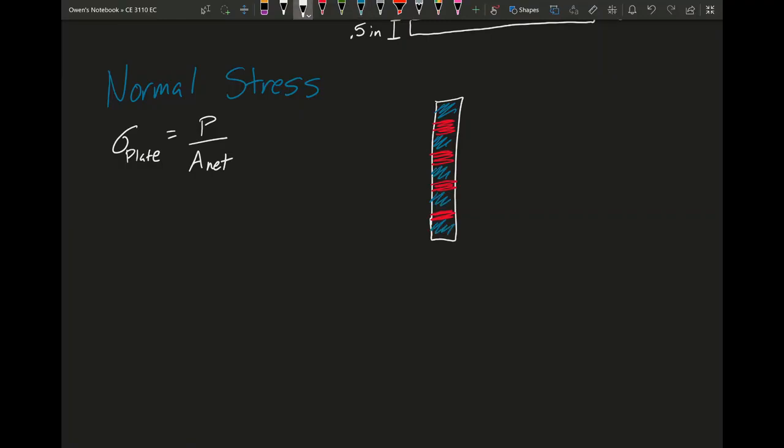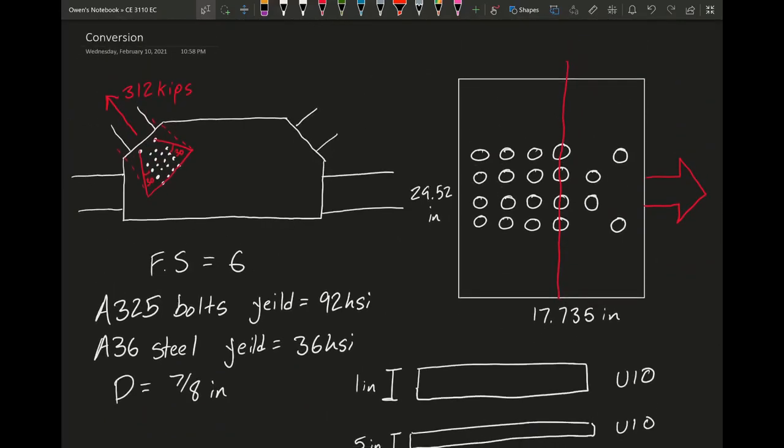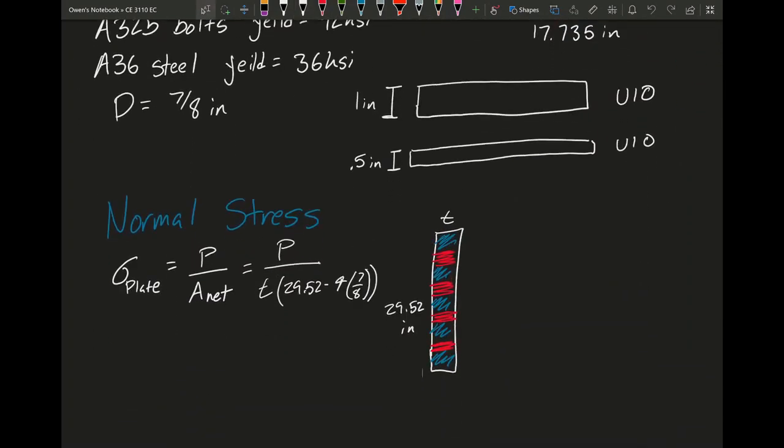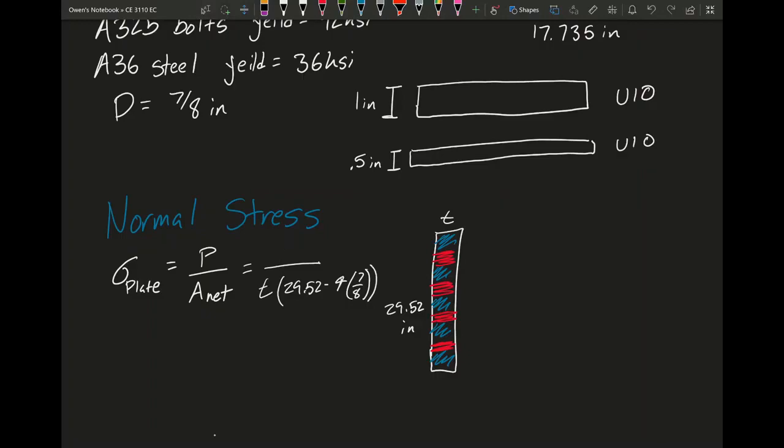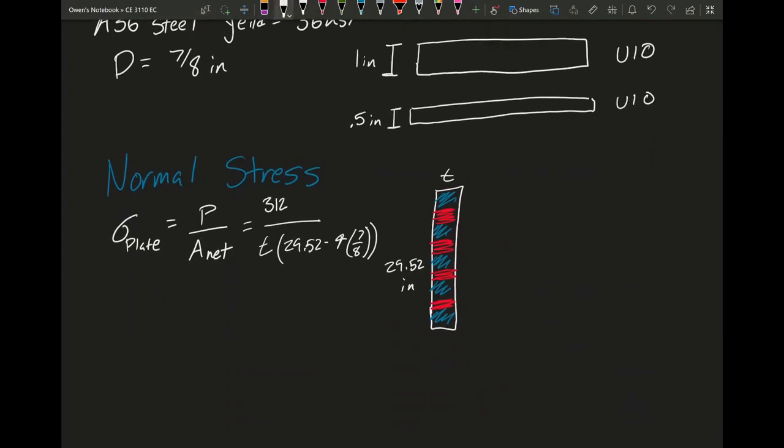Now that we know our track is actually going to go through four bolts, we can start calculating our net area. I'll do a little diagram here. The red is the four bolts that will take a chunk out of our A net, and then the blue is all the area we want to make our A net. We know our force over our A net, which is going to be thickness times 29.52 inches minus four times the bolt diameter, which is 7 eighths. One other thing we need to consider is the fact that there's another plate on the other side. It's going to be sharing the force in between the two plates, so basically our force is going to get cut in half.